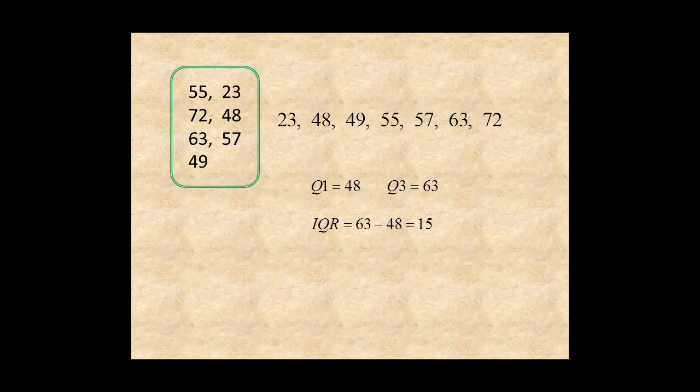However, there is a precise definition. If a data value is more than 1.5 times the value of the interquartile range beyond the quartiles, it's an outlier. This is called the 1.5 rule.